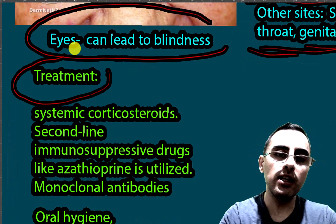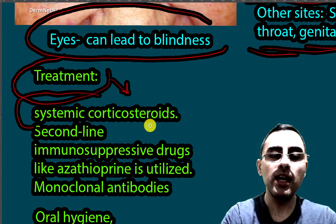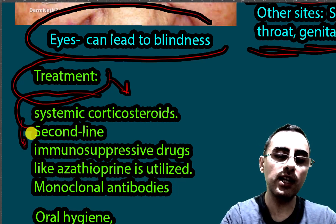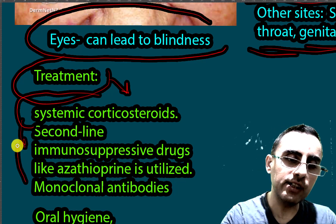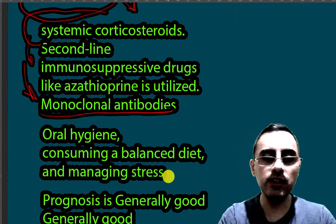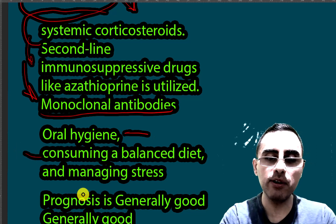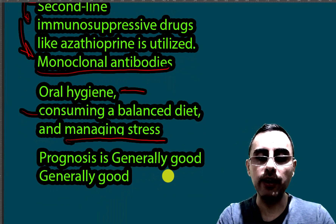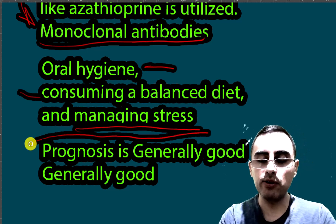The idea of treatment is immunosuppression. Systemic corticosteroids are used as first-line treatment. Second-line treatment includes immunosuppressive drugs such as azathioprine, and according to the latest studies, monoclonal antibodies have also shown some effectiveness. Oral hygiene is important, consuming a balanced diet is important, and managing stress also plays a part.